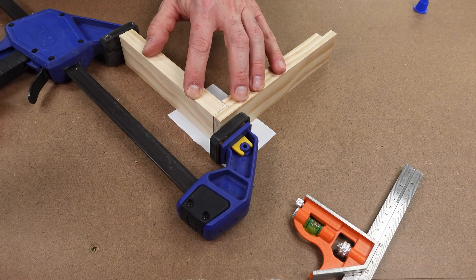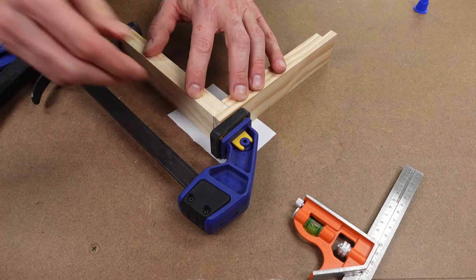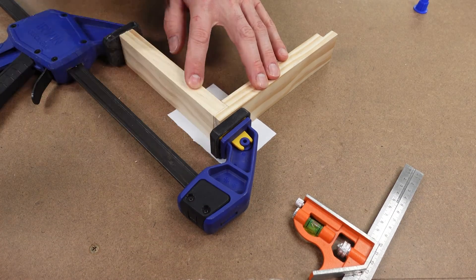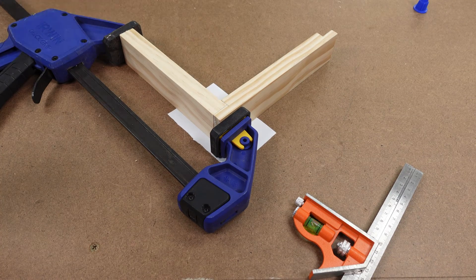This joint will need a clamp and a check for square when clamped. You might need a couple of squares to do this. That is, one that fits on the inside corner. Then leave the joint to dry.